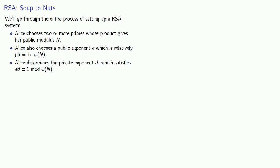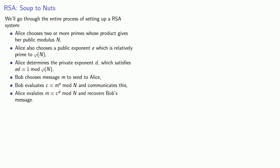Now once this system is set up, Bob chooses message m to send to Alice. Bob evaluates the ciphertext c which is going to be congruent to m to the power e mod n and communicates this. Finally, Alice evaluates m equivalent to c to the power d mod n and recovers Bob's message.